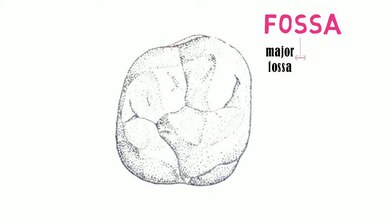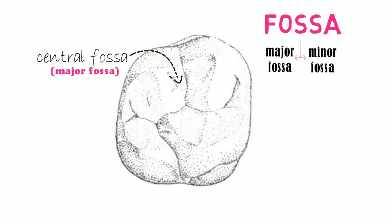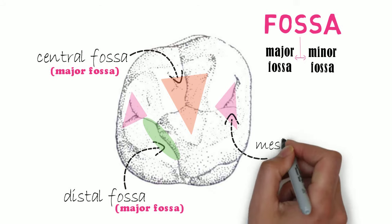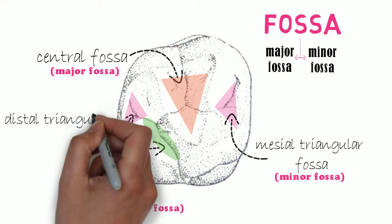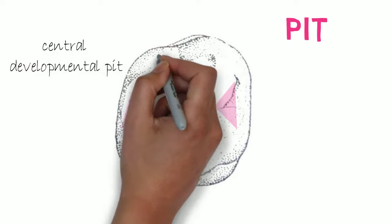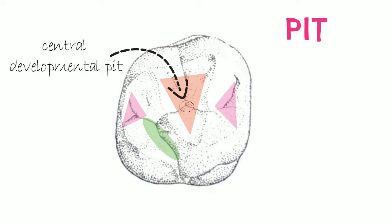There are two major fossae and two minor fossae. The two major fossae are the central fossa, just mesial to the oblique ridge and triangular in shape, and the distal fossa, just distal to the oblique ridge and linear in shape. The two minor fossae are the mesial triangular fossa and distal triangular fossa, just adjacent to the marginal ridges. A central developmental pit is seen at the bottom of the central fossa.